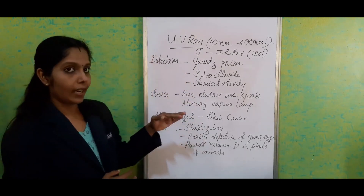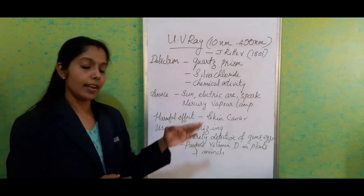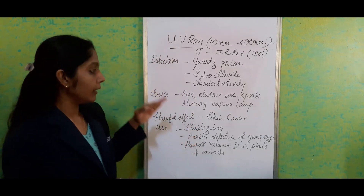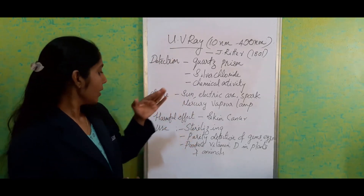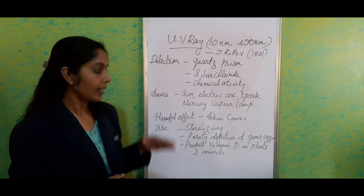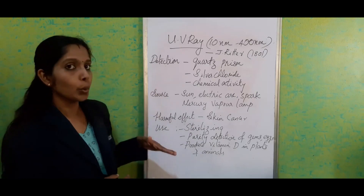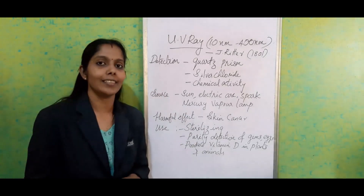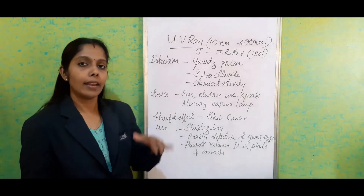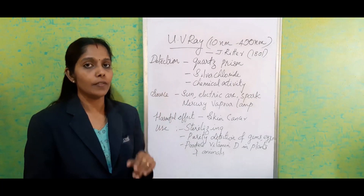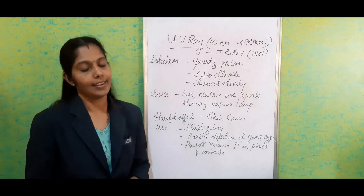So the main topics under ultraviolet radiation are: detection — three different methods; then the sources; its harmful effects; its uses; and its properties. These are the main things to consider for ultraviolet radiation.